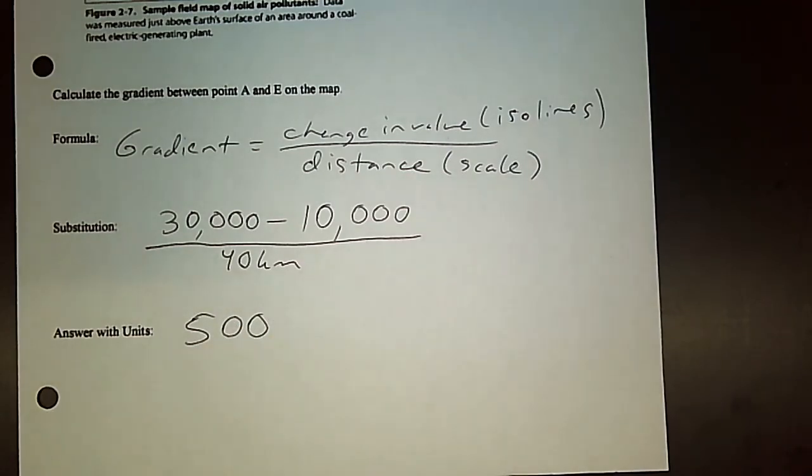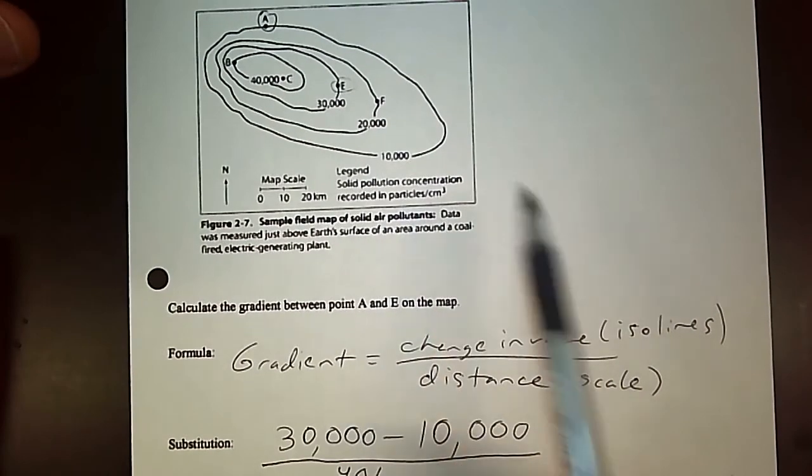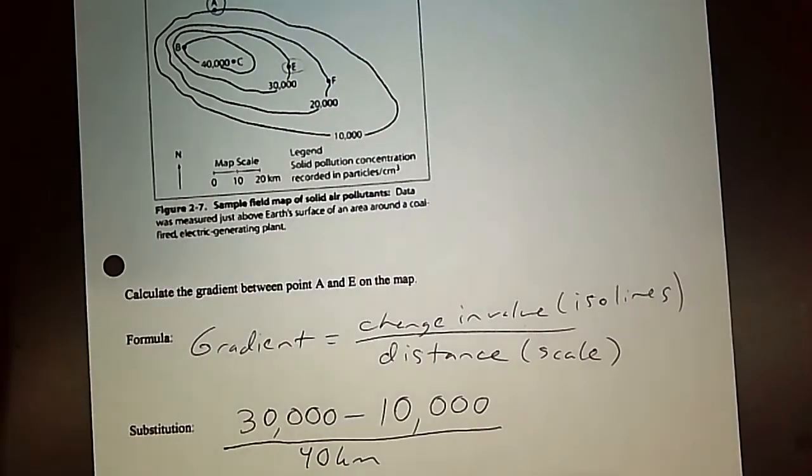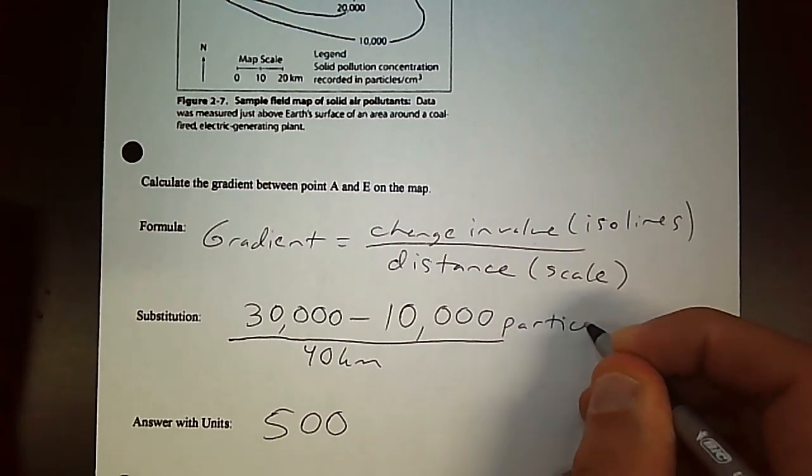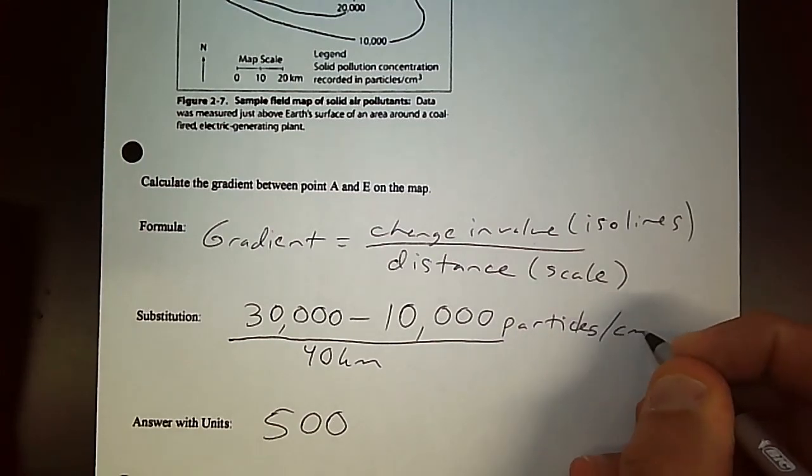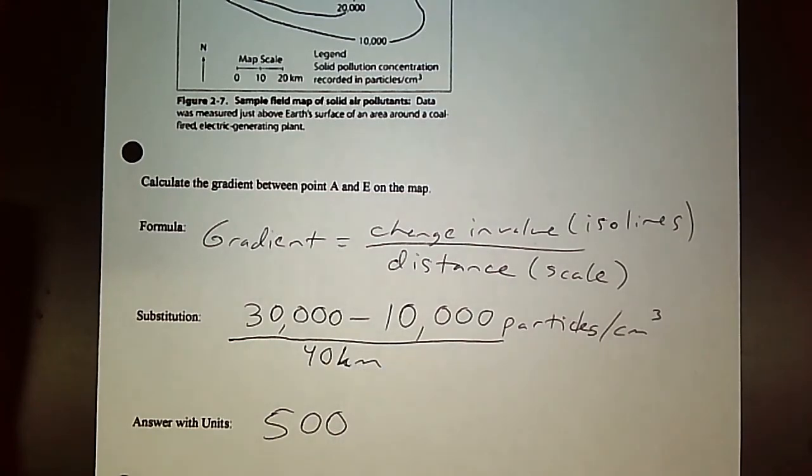Now, we know we don't just write numbers in science. So you have to look back at the units. The units up on here were particles per centimeters cubed. So that's going to be the top part of your fraction. So particles per centimeters cubed. And then the distance is in kilometers.